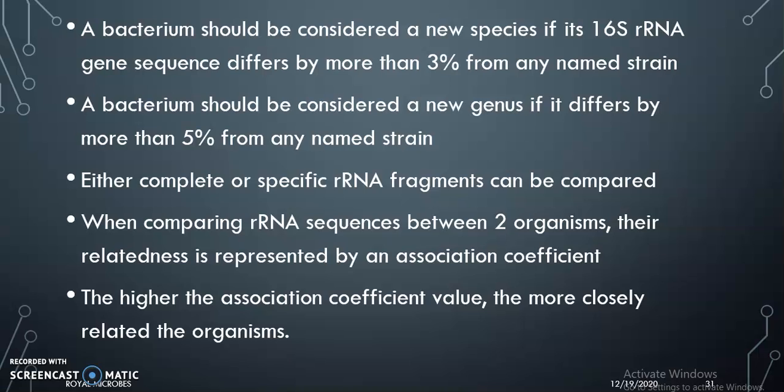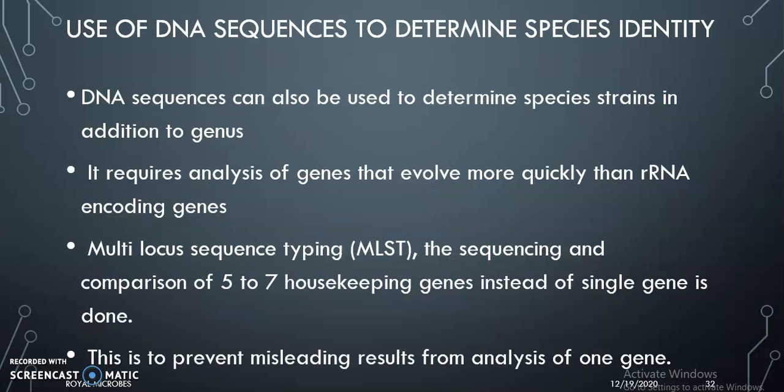Either complete or specific RNA fragments can be compared. When comparing RNA sequences between two organisms, relatedness is represented by an association coefficient — the higher the value, the more closely related the organisms. DNA sequences can also be used to determine species identity, requiring analysis of genes that evolve more quickly than rRNA-encoding genes. Multi-locus sequence typing (MLST) is used, where 5 to 7 housekeeping genes are sequenced and compared instead of a single gene, to prevent misleading results from single-gene analysis.